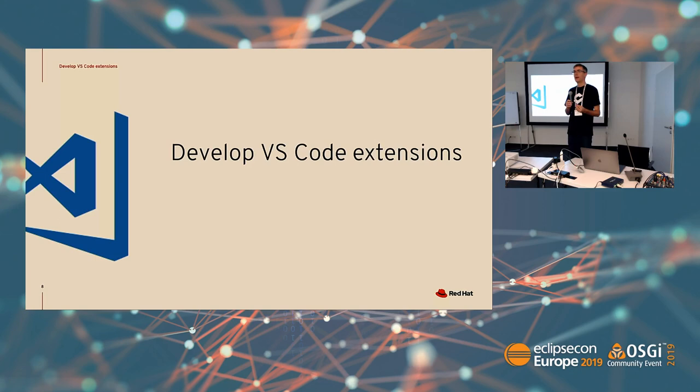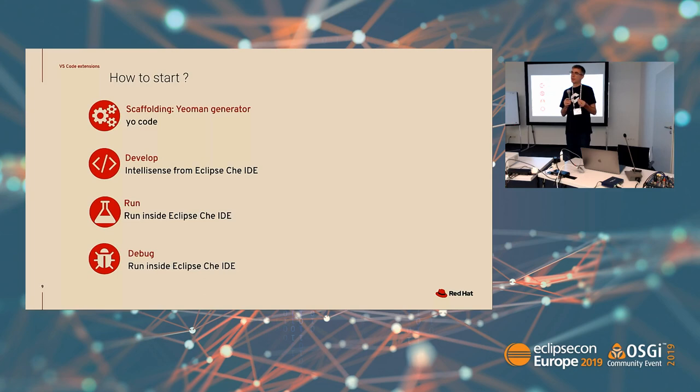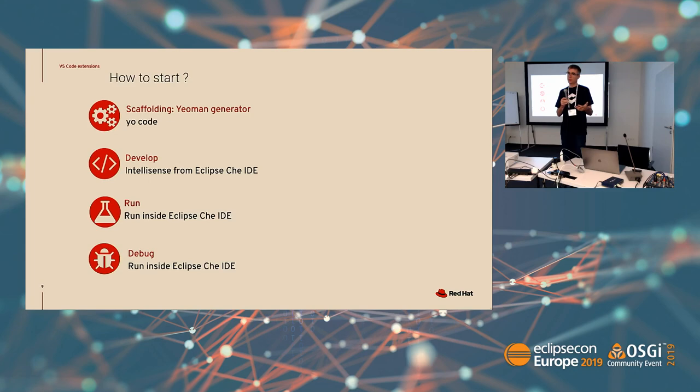The focus of my presentation is how to develop VS Code extensions inside Eclipse Che — you can do all the steps inside Eclipse Che. When you want to create a new VS Code extension inside Theia, you just run your code and generate the VS Code extension. Then if you enable IntelliSense, it's very easy to have code completion for your extension.